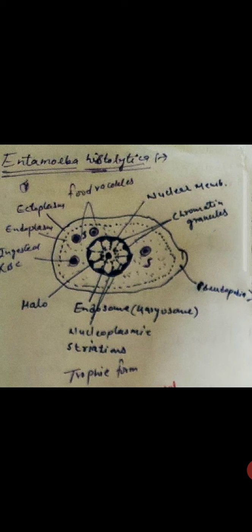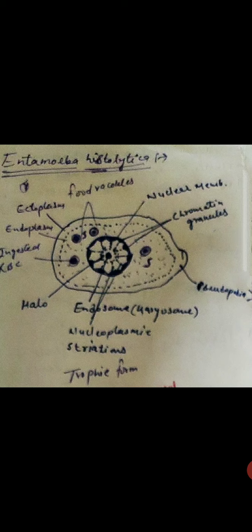The cytoplasm is divided into two parts: outer ectoplasm and inner endoplasm. Ecto is outside and endo is inside. The ectoplasm is clear and non-granular, with no granules present. The endoplasm is granular. In the endoplasm, the nucleus is present.